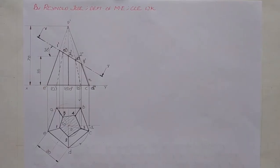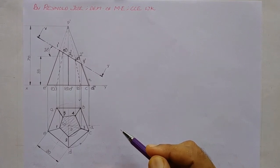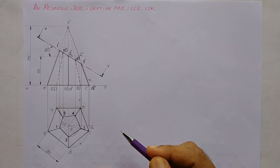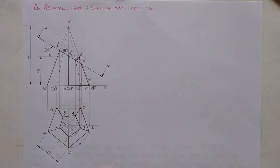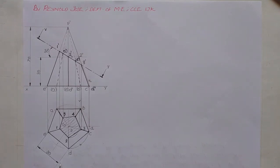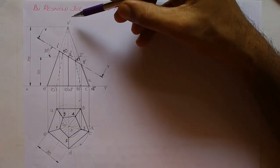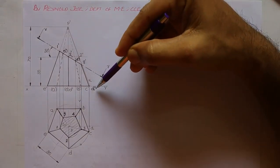Now we shall draw the development of the truncated pyramid. As mentioned in the question, we have to draw the development of the remaining portion of the solid. To draw this development we require the true length of the slanting edge and the true length of the base edge. The true length of the base edge is already available as 30 mm, and the true length of the slanting edge is P'-D1''.